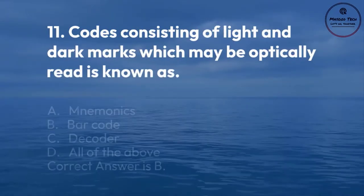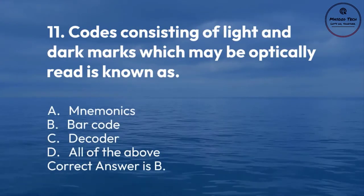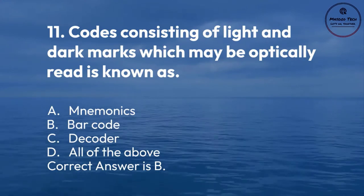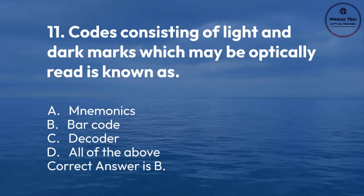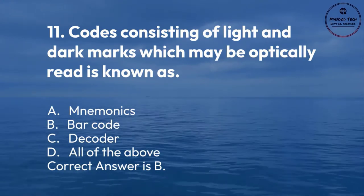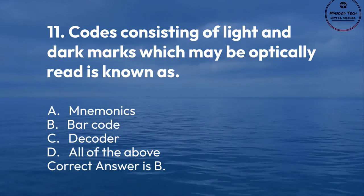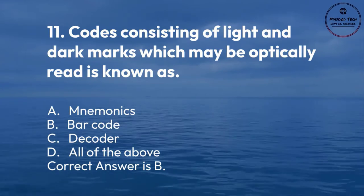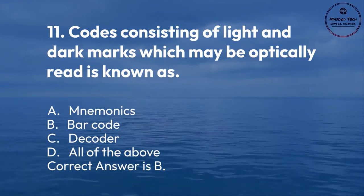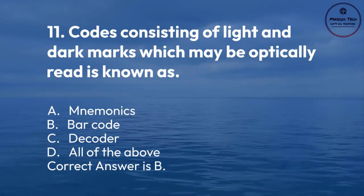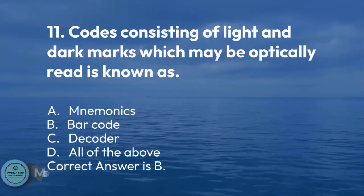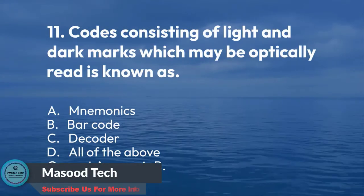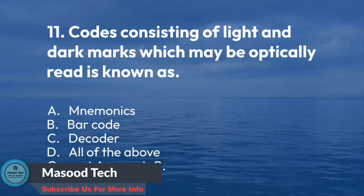Number 11. Codes consisting of light and dark marks which may be optically read is known as: A. Mnemonics. B. Barcode. C. Decoder. D. All of the above. Correct answer is C.